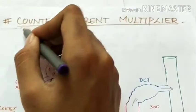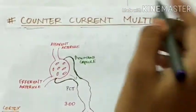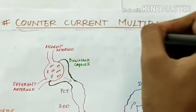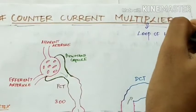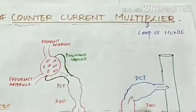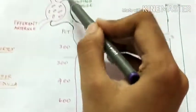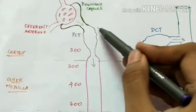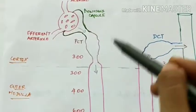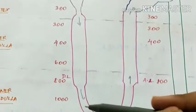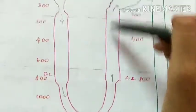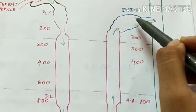Let us first see about the counter-current multiplier, which is the loop of Henle. This is the structure of the nephron: glomerular capillary, Bowman's capsule, proximal convoluted tubule, the loop of Henle with its descending limb, hairpin bend, and ascending limb, the distal convoluted tubule, and the collecting duct.